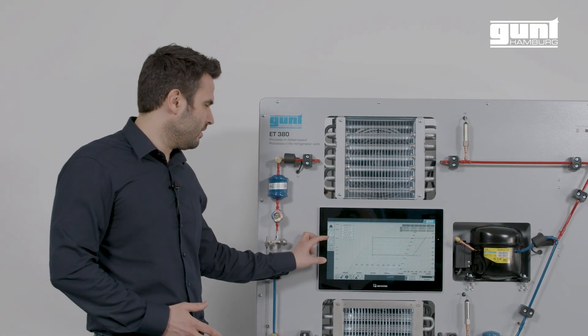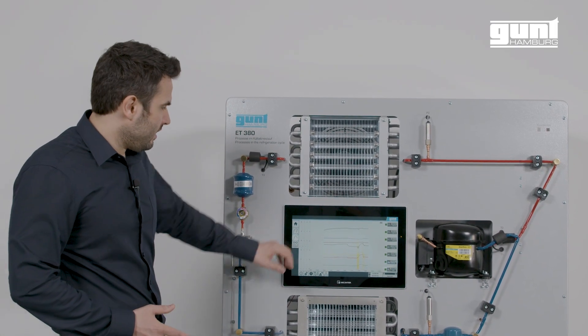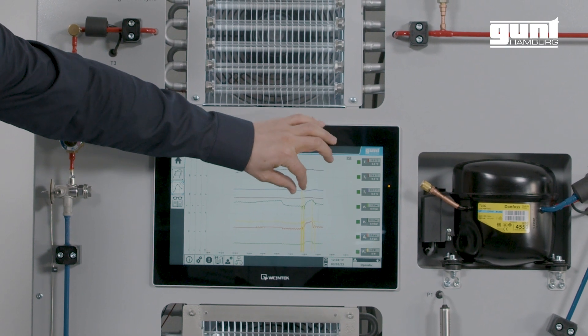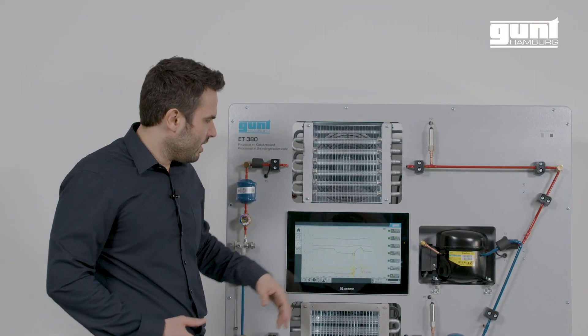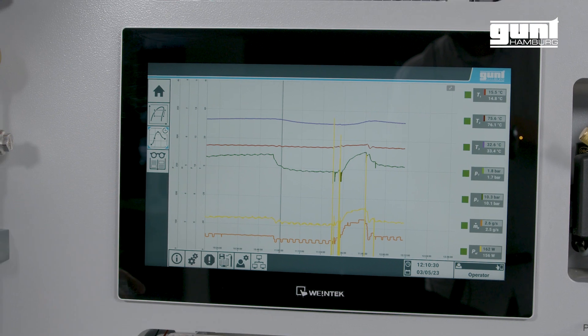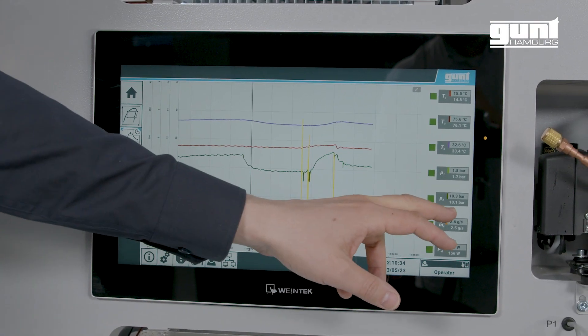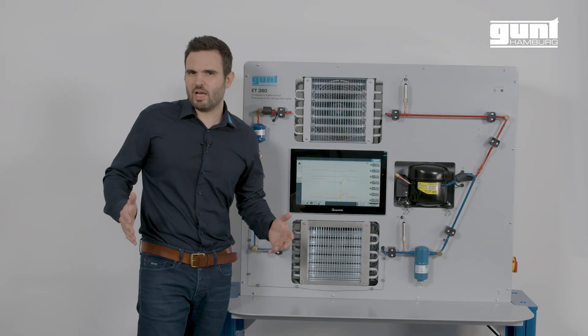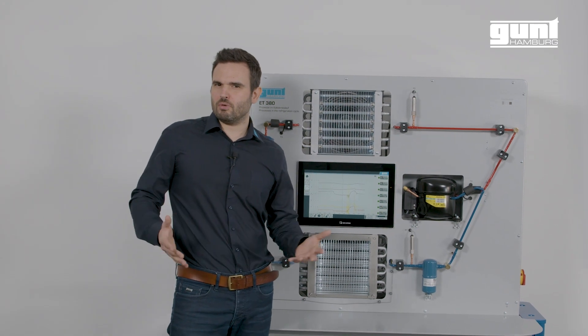On the next button we have a time plot where all the recorded measured data is displayed over time. You can just zoom in and out with two fingers as we are used to on our smartphones. For particularly demanding lessons you could choose any point on the time axis and ask your students what could have happened here to the refrigeration system at this characteristic point. All measured data can be transferred to a PC and can be processed in Excel.